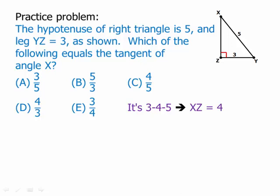Now notice that we want the tangent of angle X. From the perspective of X, 3 is the opposite side and 4 is the adjacent side. Very important. It would be very different if we were finding the tangent from Y. But from the point of view of X, 3 is opposite and XZ equals 4. That's the adjacent.